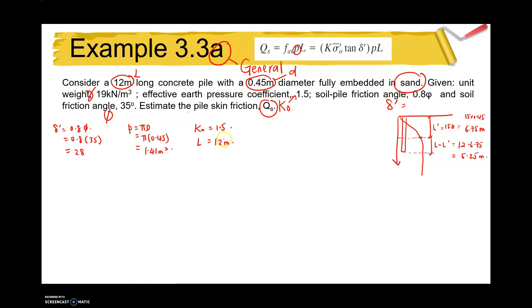To determine the skin friction or shaft resistance for this condition, you need to have one layer here and two layers here, meaning points A, B, and also C. In determining the sigma value for points A, B, and C, we can use this method.